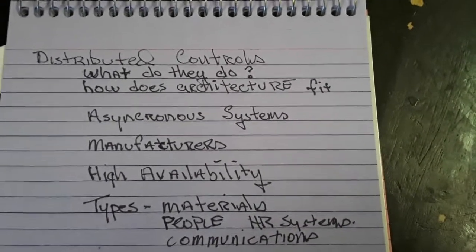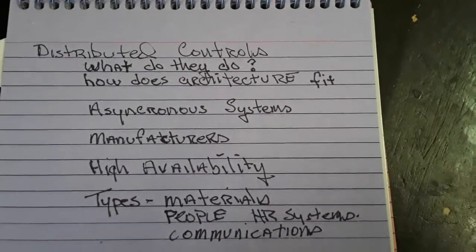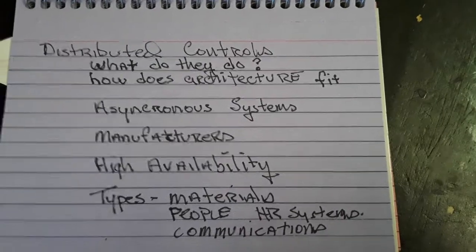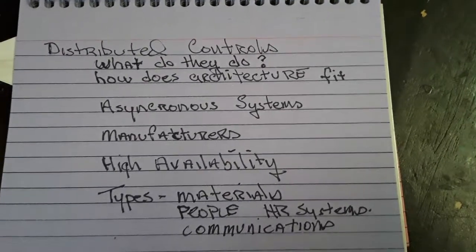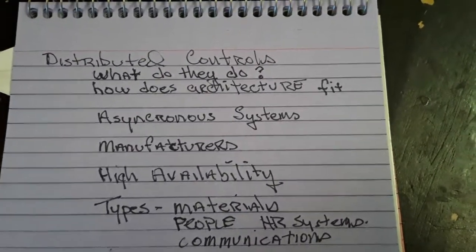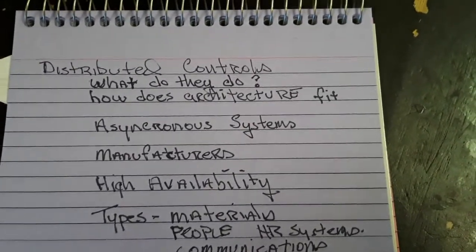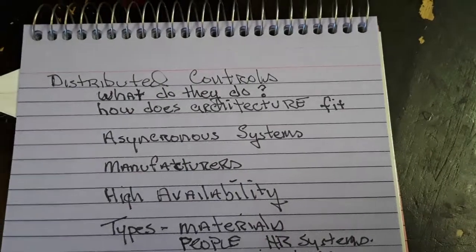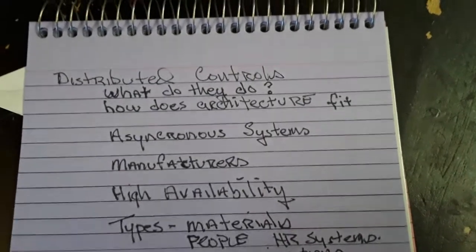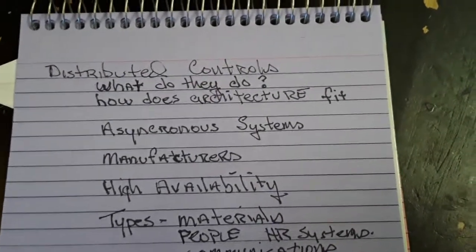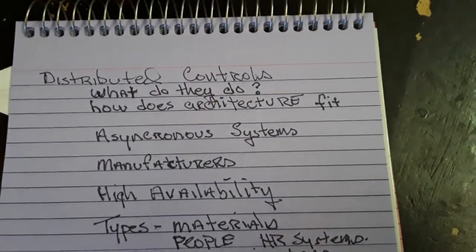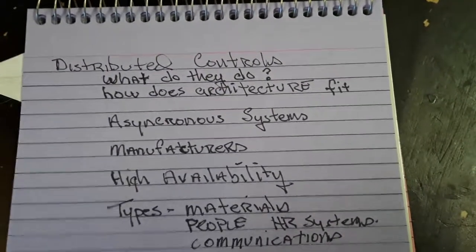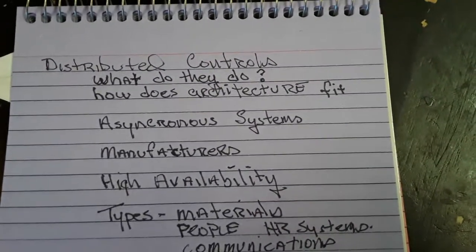Manufacturers — who makes distributed controls? What levels are they? The word 'high availability' — these are kind of search words. Distributed controls, high availability.